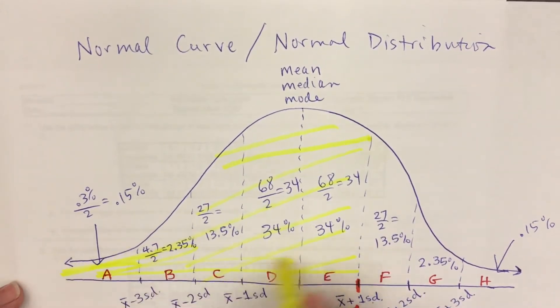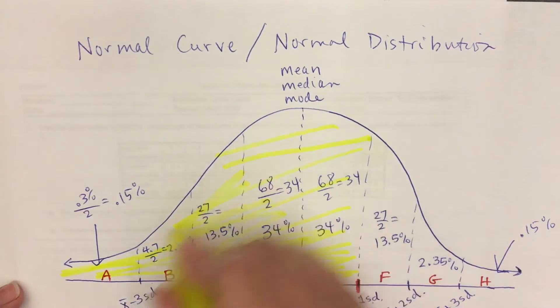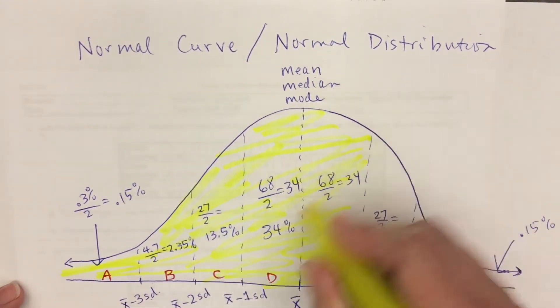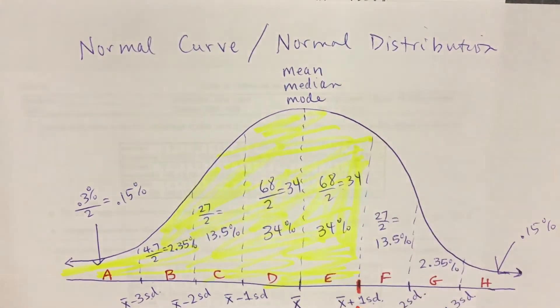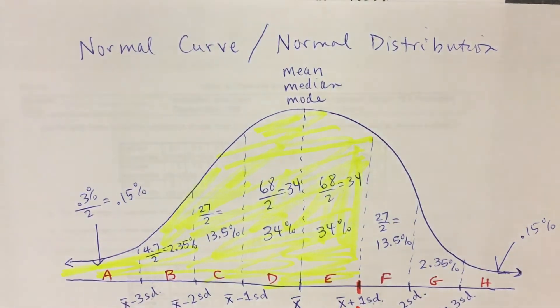From the normal curve, I could read a percentile, but it is not as accurate as a percentile from a percentile table.